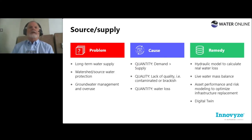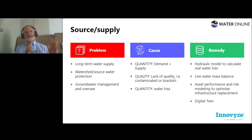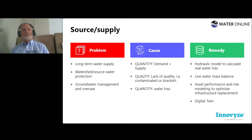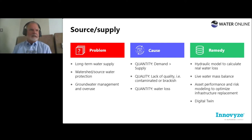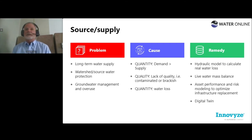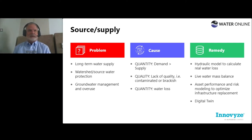If source and supply is one of our top challenges, the problems include long-term water supplies, watershed or source water protection, and groundwater management and overuse. The classic cause from a quantity perspective is that demand is exceeding supply — that's been going on for a very long time, especially in drought conditions. It's up to us to either mitigate water loss or decrease demand, but decreasing demand decreases revenues — it's a vicious circle. We're balancing those two elements.